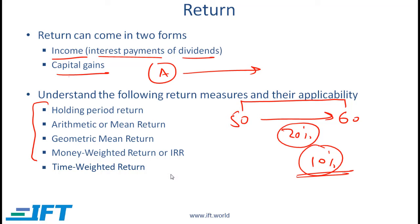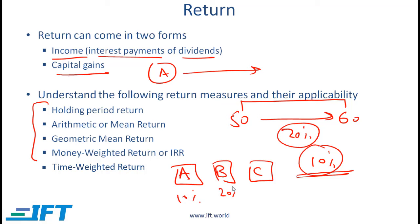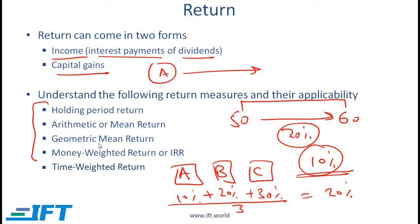Arithmetic mean return simply refers to the arithmetic mean of returns. This makes sense if you have three different stocks: the first returns 10%, the second 20%, and the third 30%, and you want to figure out your average return. You use the arithmetic mean, which is simply the sum of the three returns divided by 3, equal to 20%.